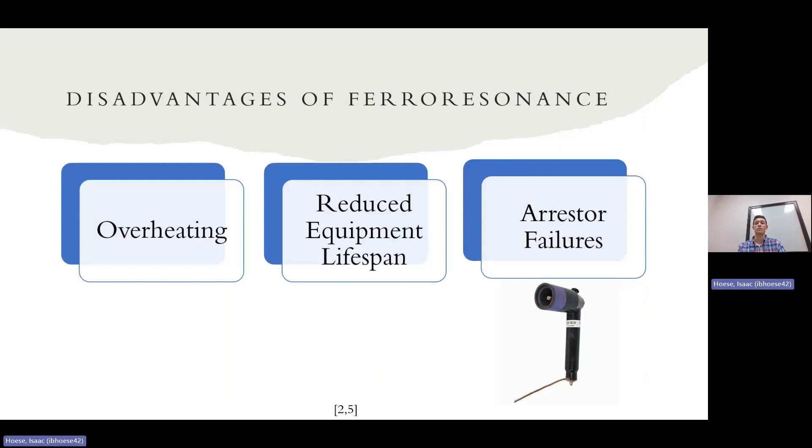And EPRI states, which is the Electric Power Research Institute, states that unchecked voltages can exceed 400% of the nominal line to ground voltage. So it's not just a little bit of over voltage. It's a lot per unit of over voltage that the system can experience.